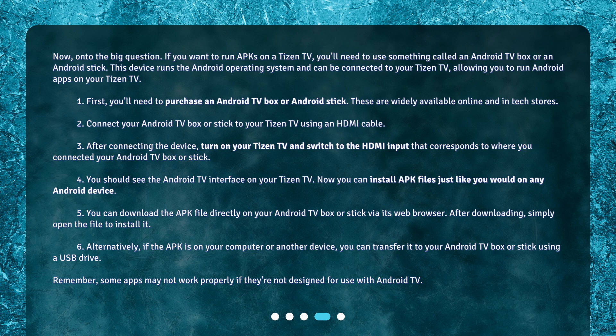Step 3: After connecting the device, turn on your Tizen TV and switch to the HDMI input that corresponds to where you connected your Android TV box or stick. Step 4: You should see the Android TV interface on your Tizen TV. Now you can install APK files just like you would on any Android device.